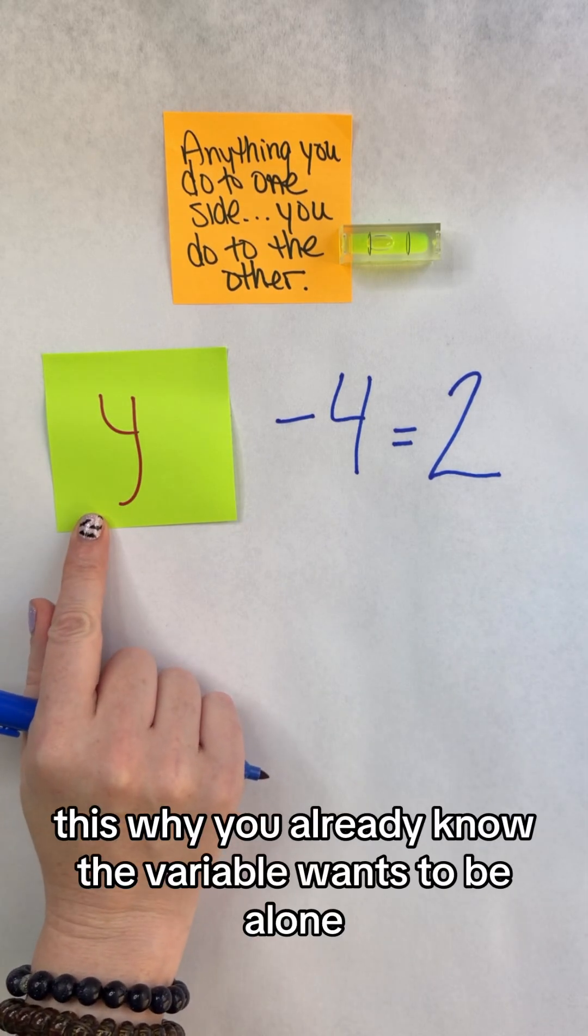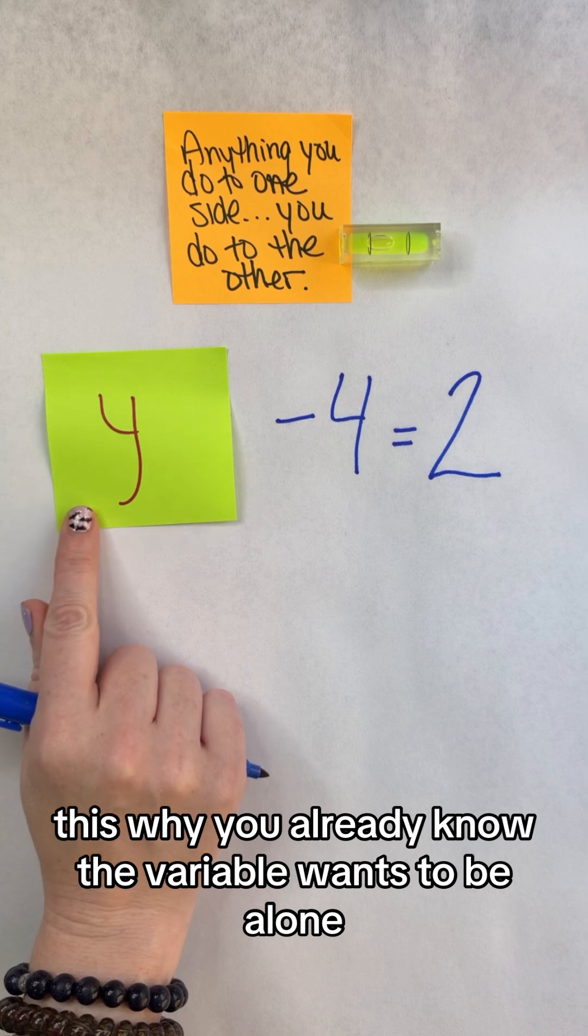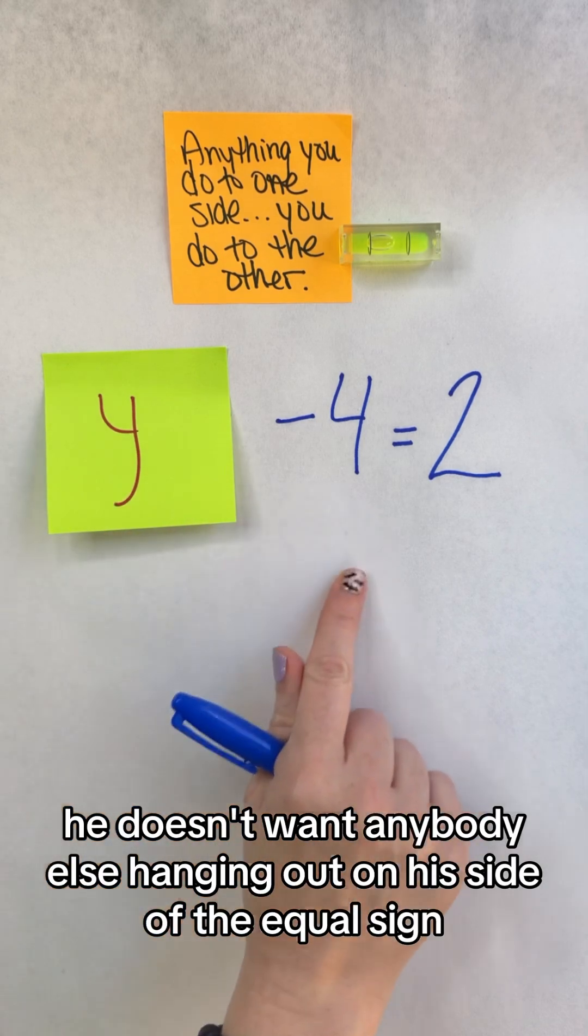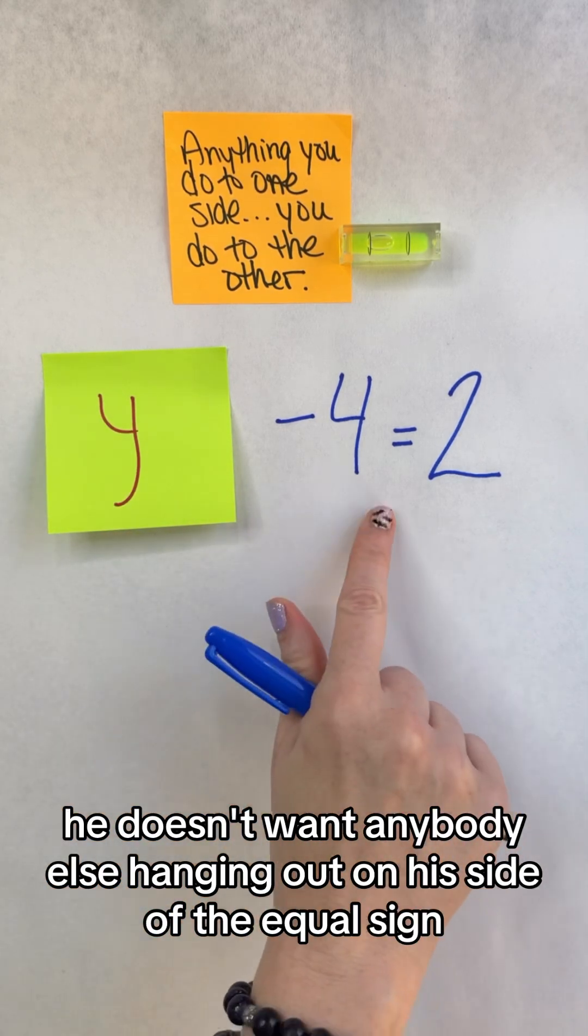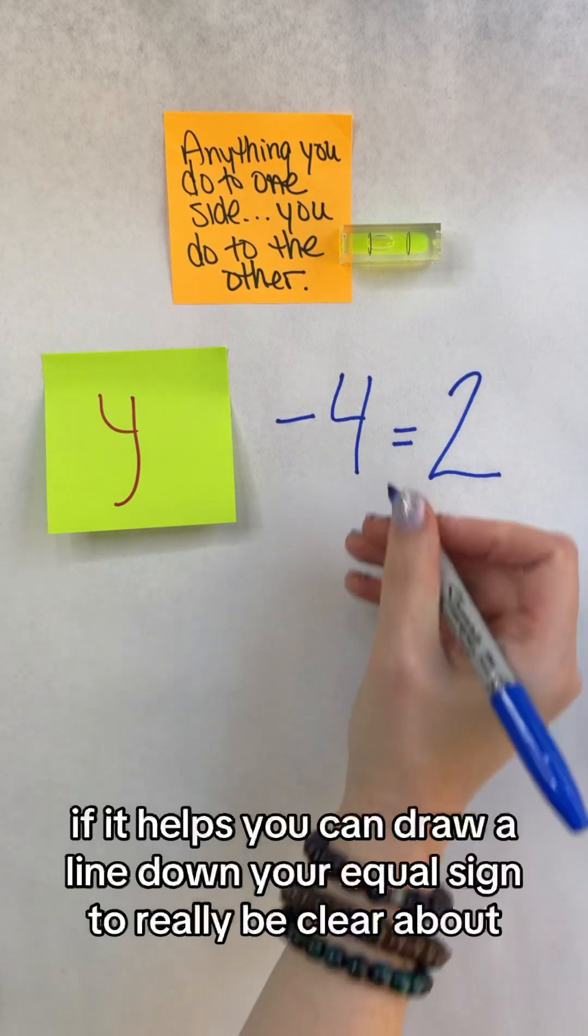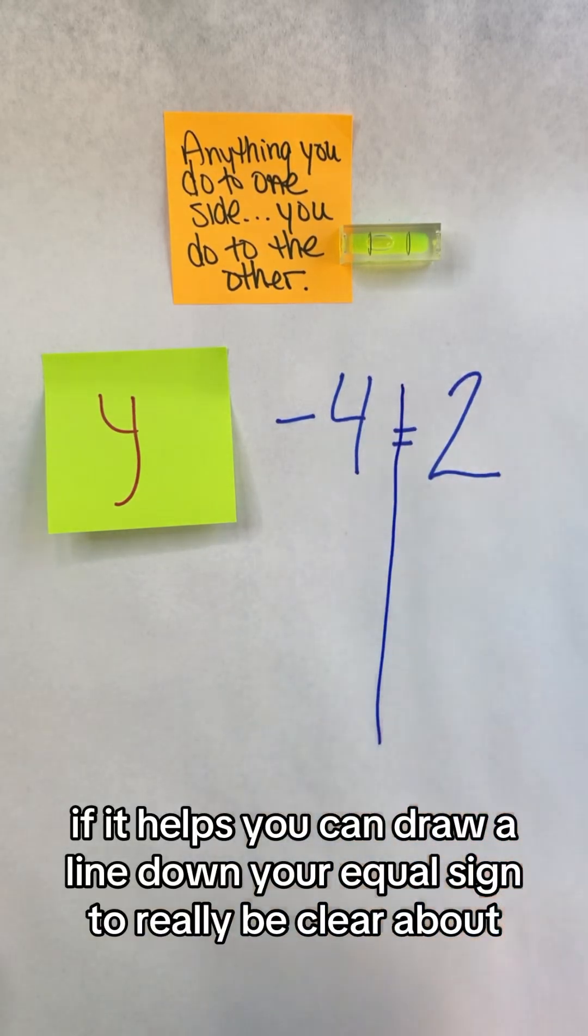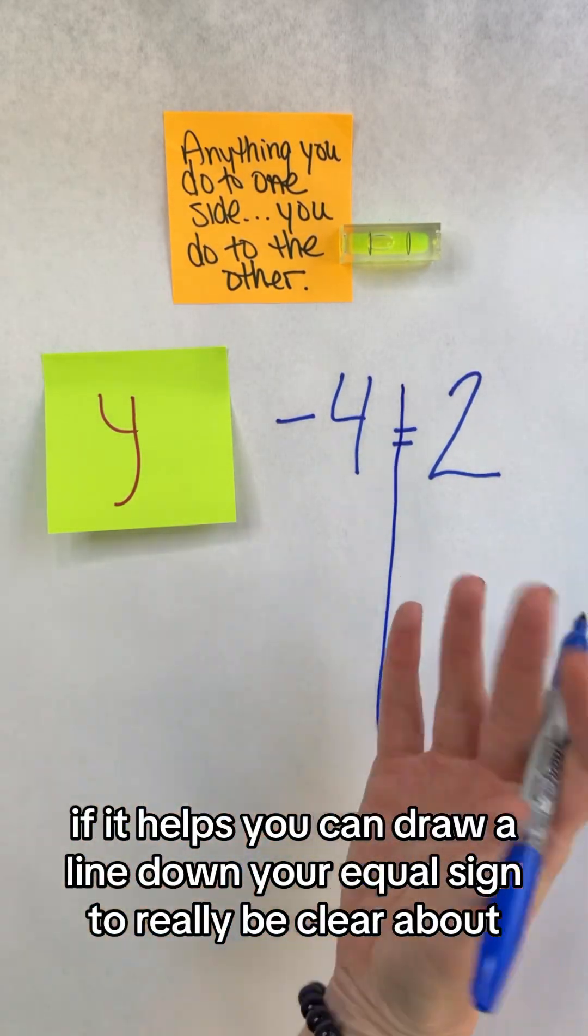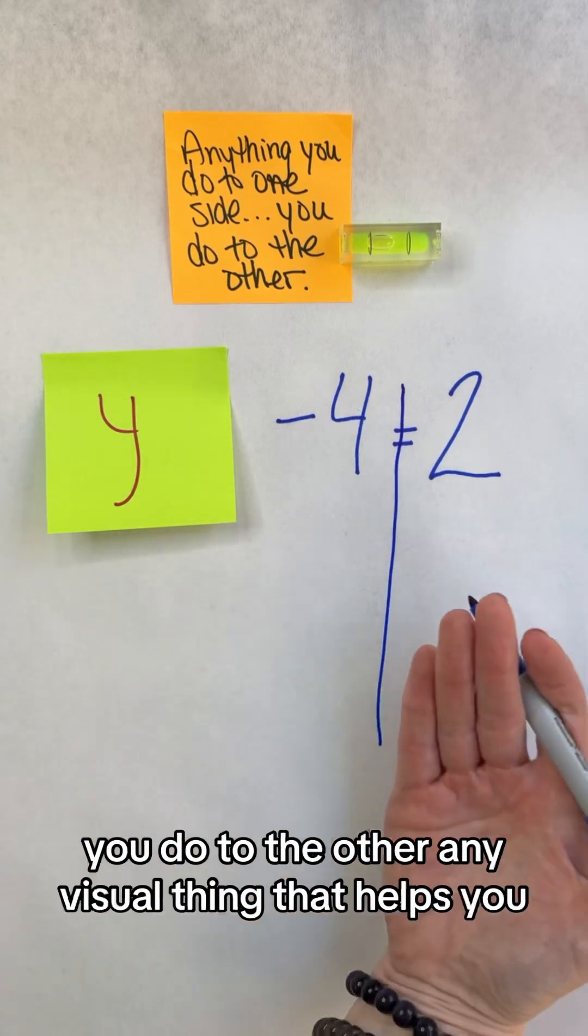This y, you already know, the variable wants to be alone. He doesn't want anybody else hanging out on his side of the equal sign. If it helps, you can throw a line down your equal sign to really be clear about anything you do to one side, you do to the other.